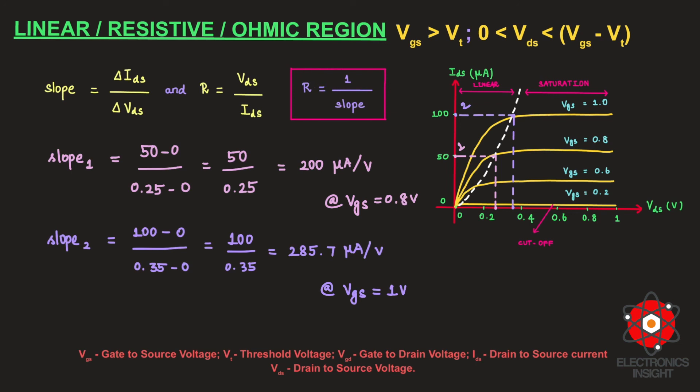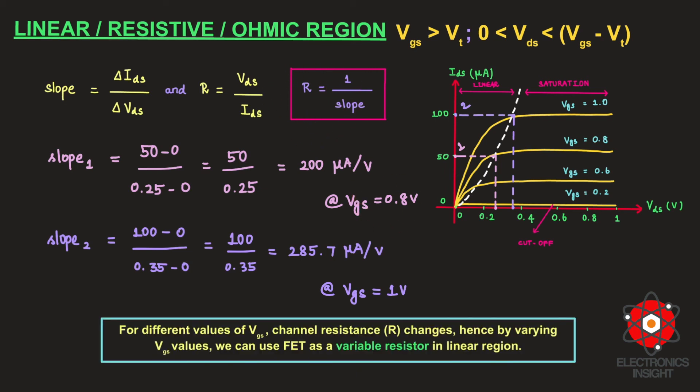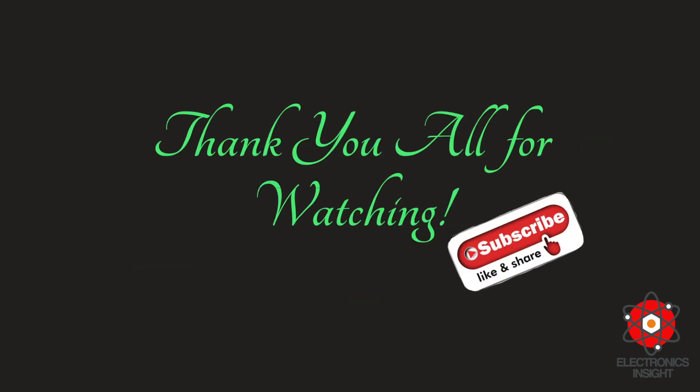Therefore, for different values of VGS, the channel resistance changes. By varying the VGS value, we can use the NMOS transistor as a variable resistor in the linear region. To summarize: we have clearly understood how a MOSFET operating in a linear region can be utilized as a variable voltage-controlled resistor, and how the linear region is related to the resistive or ohmic region. In the next video, we will understand why the linear region is also known as the triode region. Thank you all for watching this video through the Electronics Insight channel.